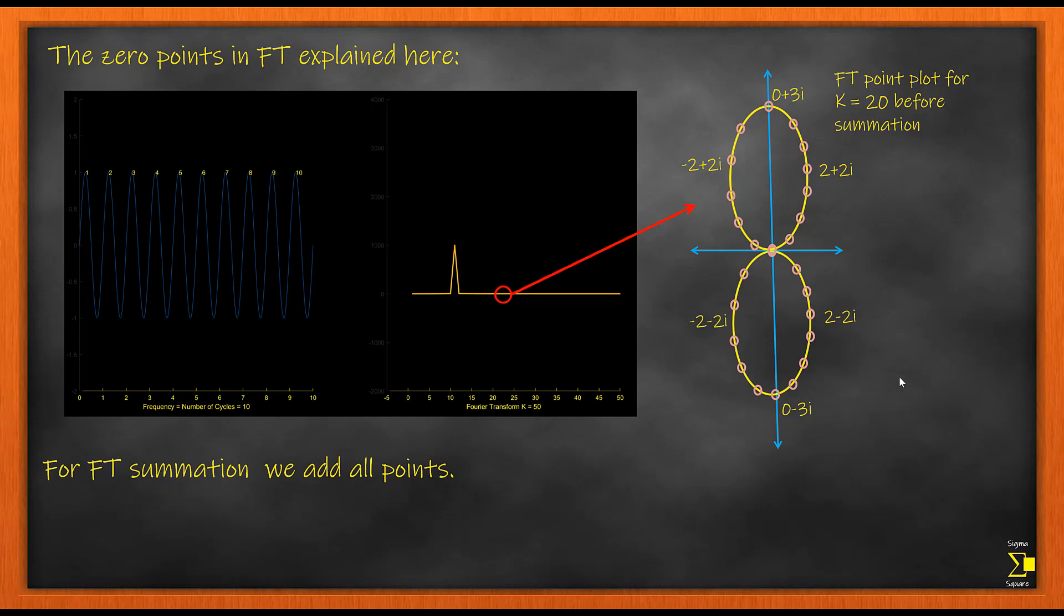When you have symmetrical blobs like these, and when you take the sum of all the points, your points tend to get cancelled because they are opposite in sign. And the total sum will always end up as 0. This is the case for all these values of k,